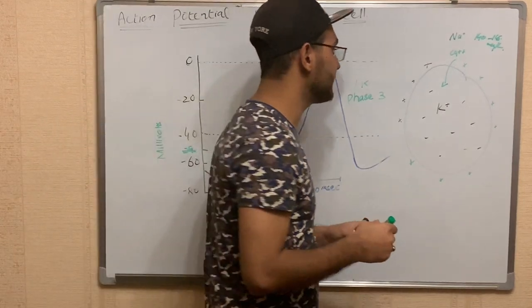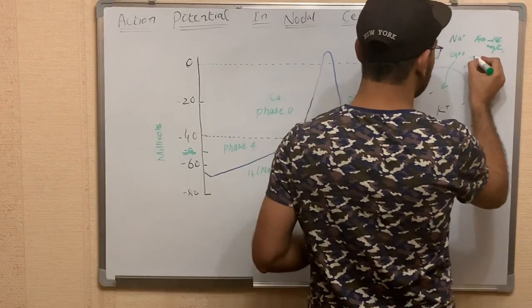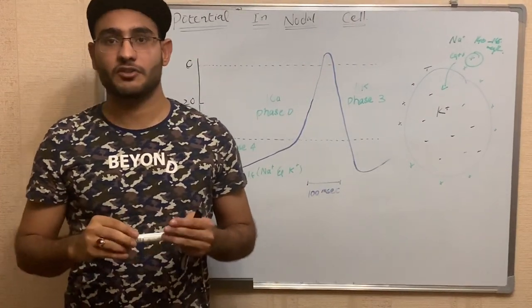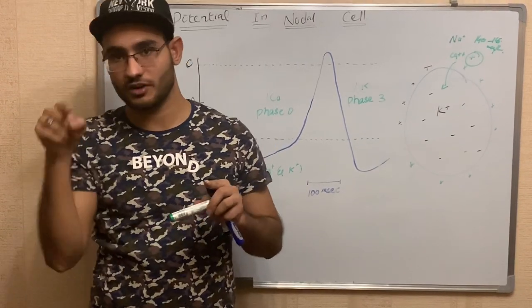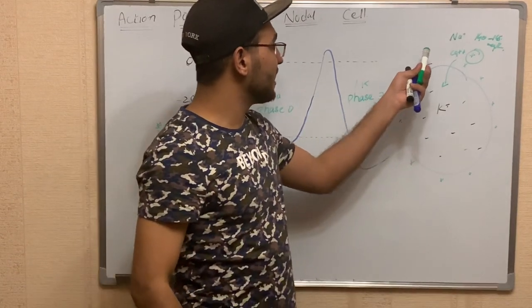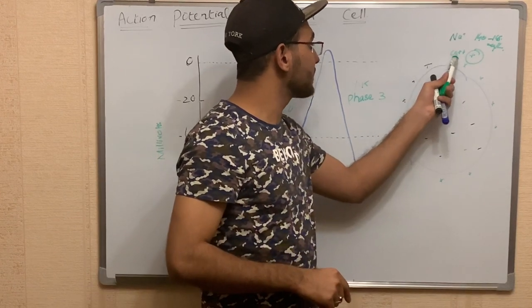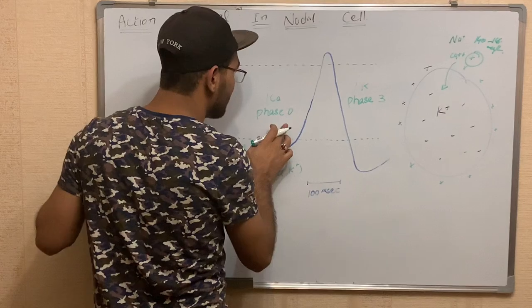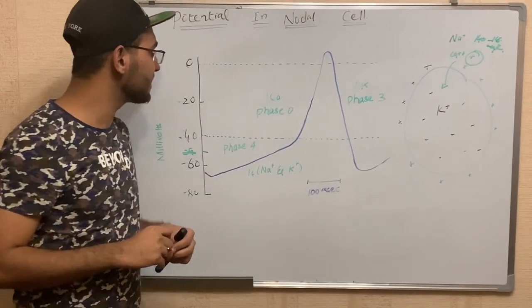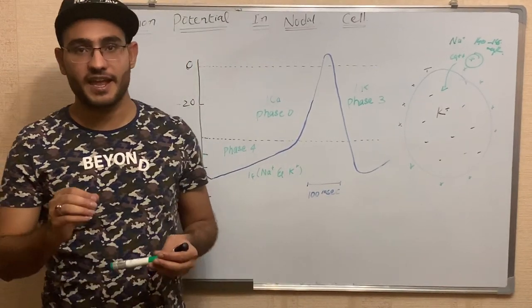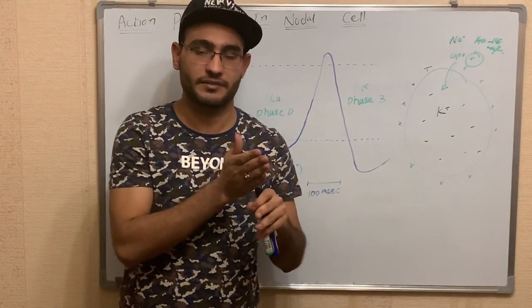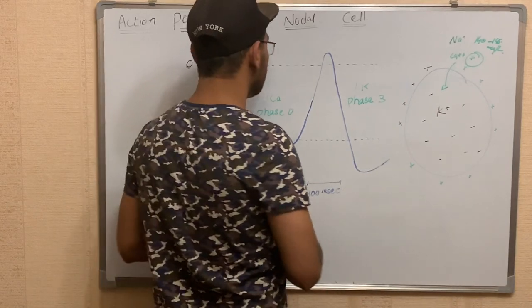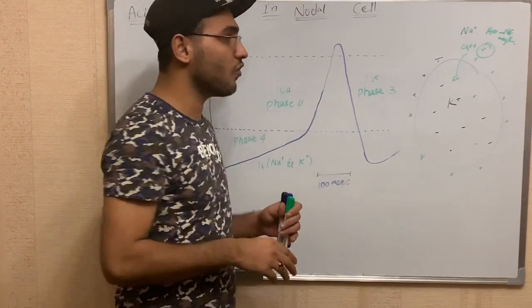These calcium channels cause influx of calcium ions, because calcium is present in high concentration outside the cell membrane. According to the electrochemical gradient, movement of ions occurs from high concentration to low concentration. So calcium moves from outside the cell membrane to inside the cell membrane. When the entry of calcium occurs, it causes depolarization — the state when negative charge changes to positive charge. When the cell reaches 0 millivolts, it causes the opening of potassium channels.